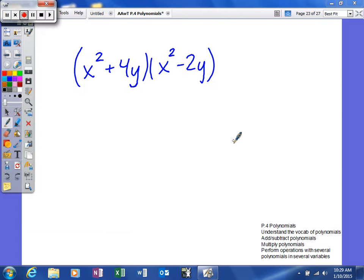All right, last example in this section. What we're trying to do is multiply these two polynomials together. As you can see, this is a little bit different because now we have multiple variables.